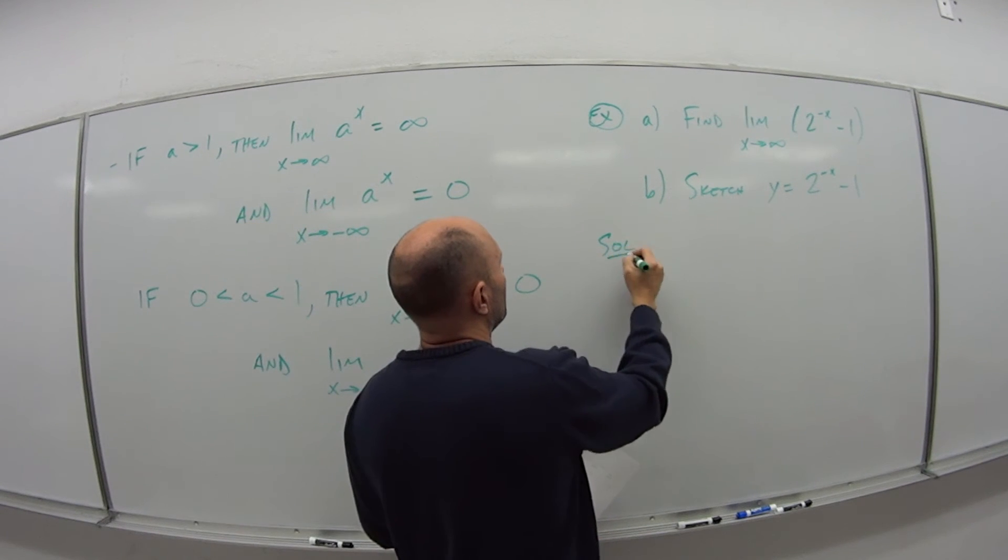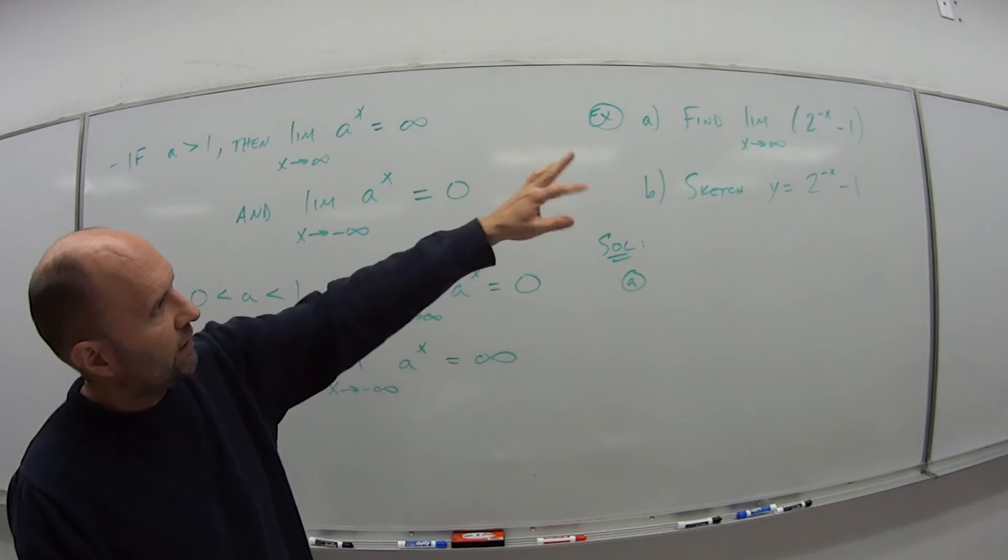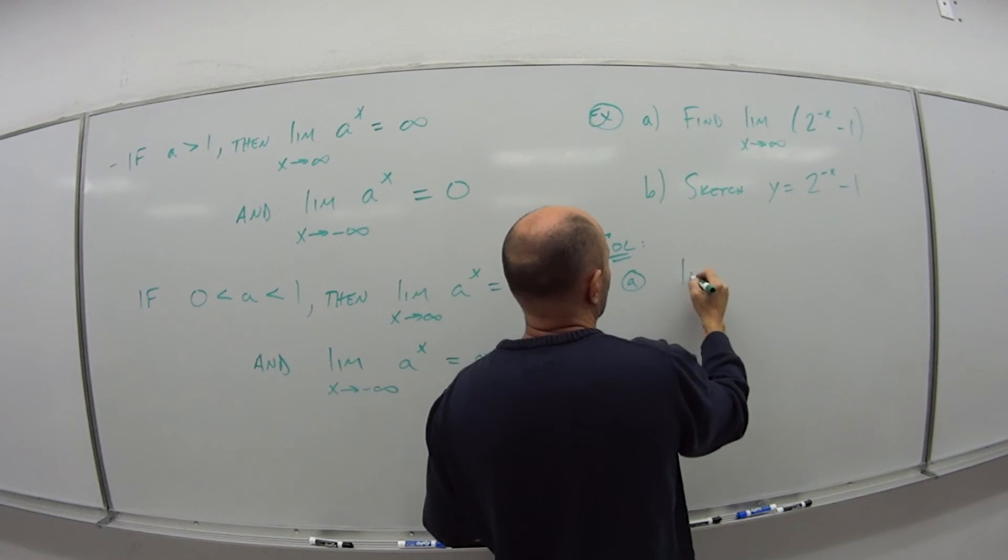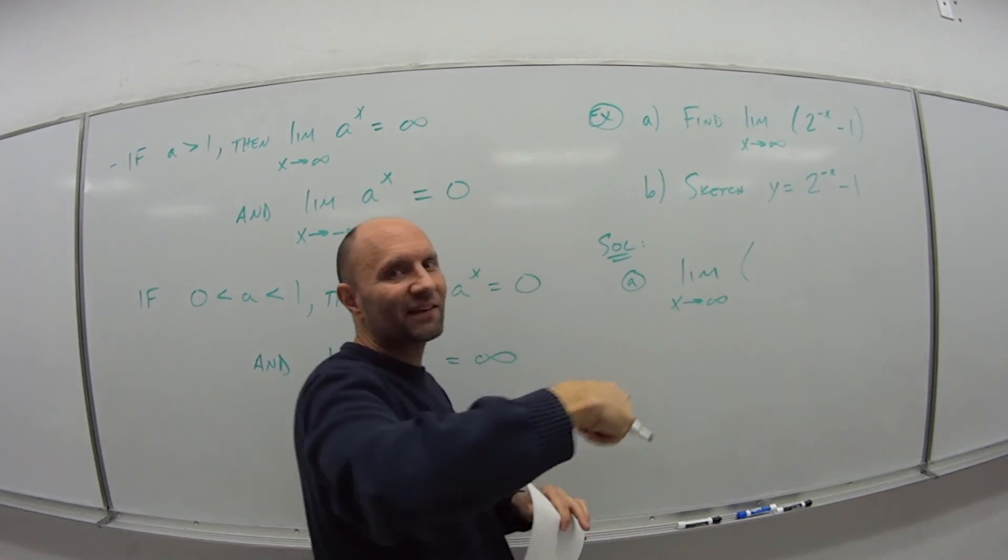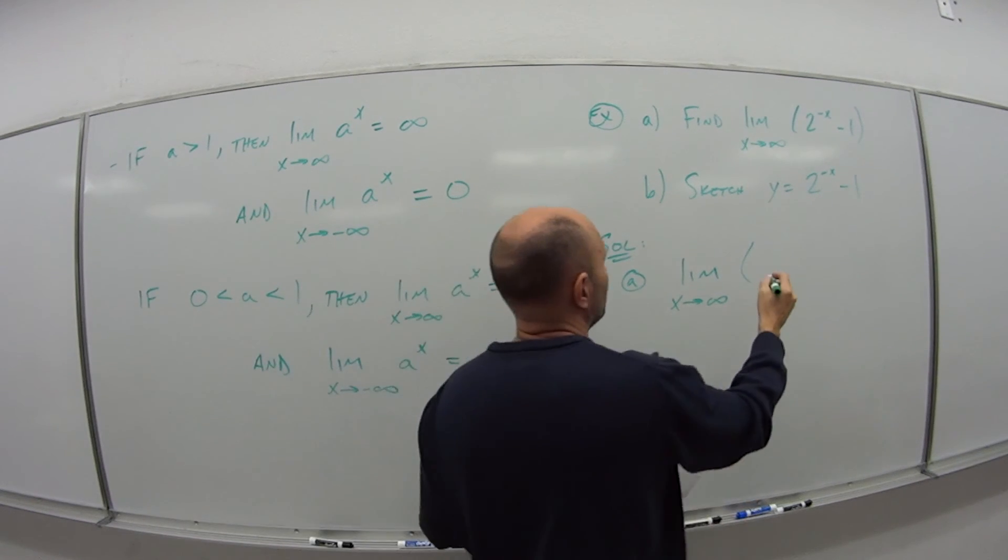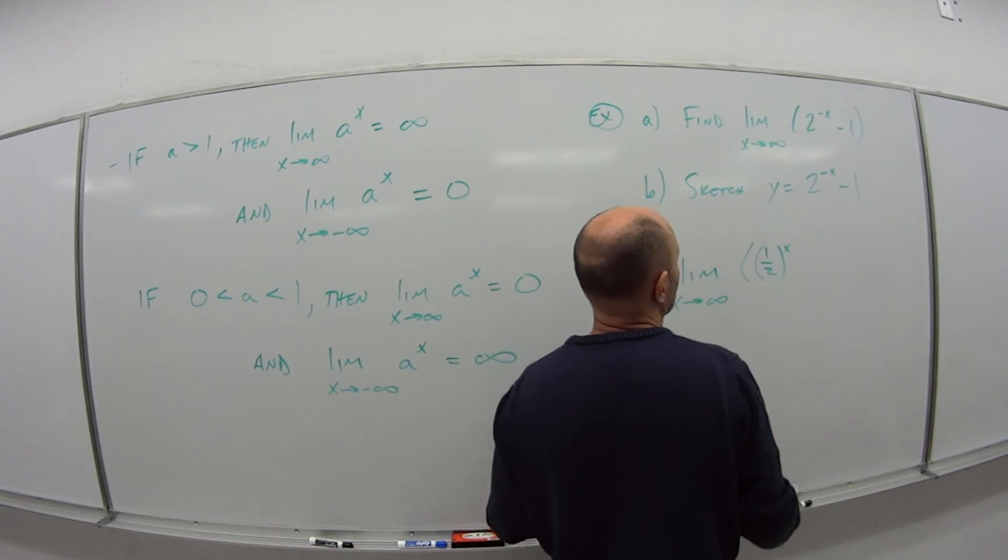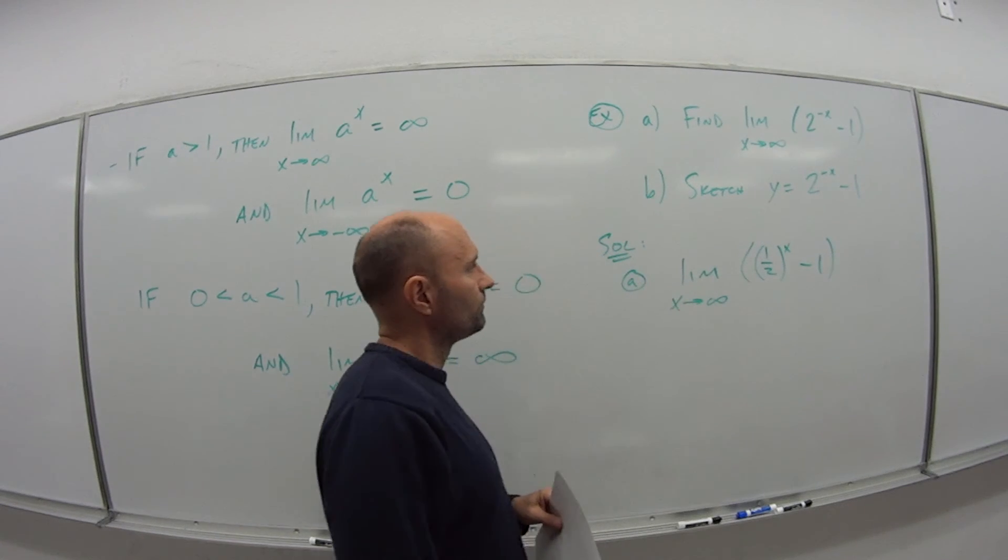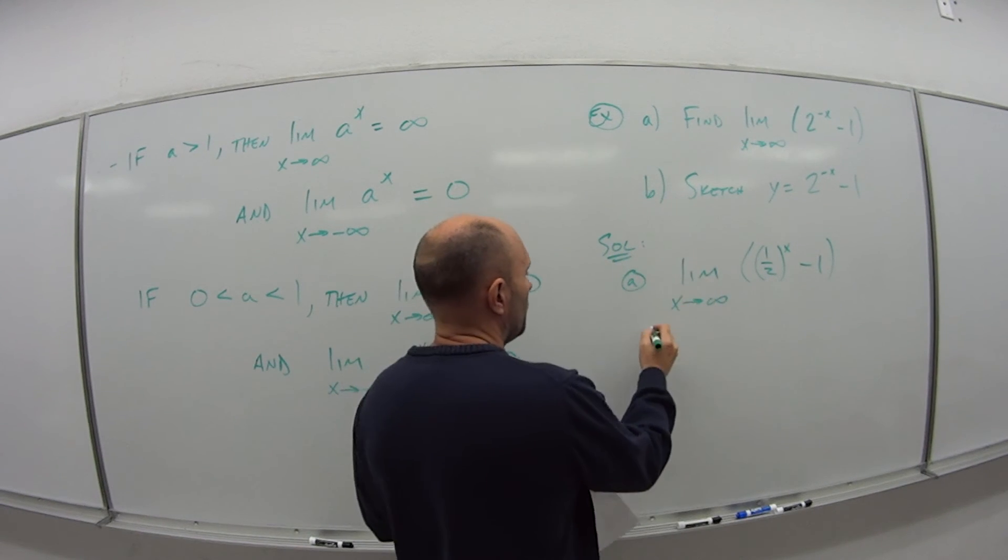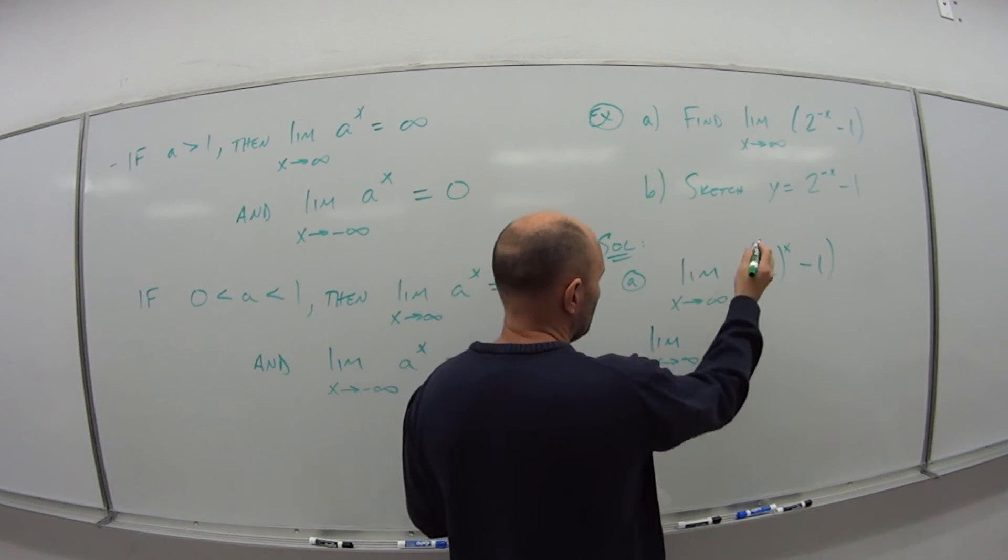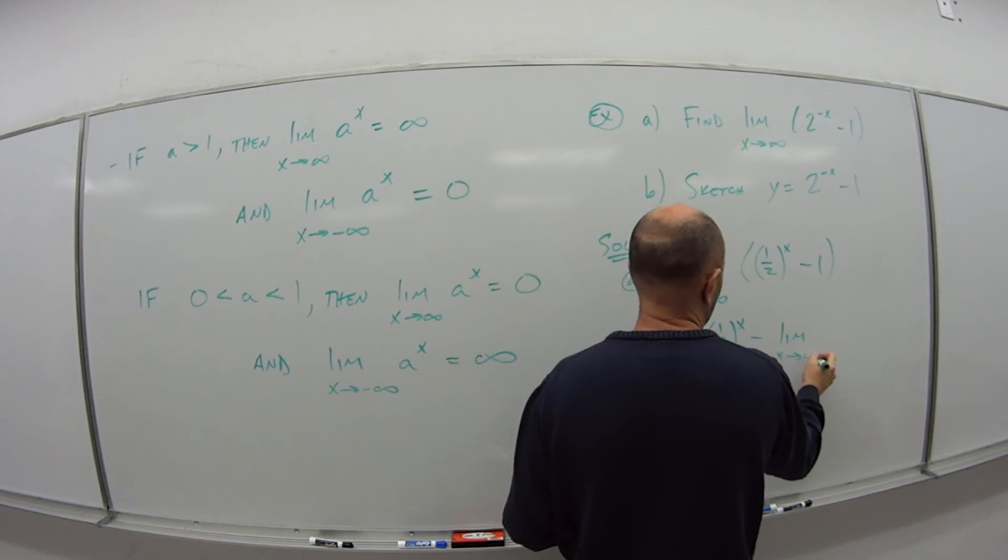So the solution for part a. So the first thing I'm going to do is rewrite that 2 to the minus x. So this is really what? It's the limit as x goes to infinity of 2 to the minus x, if I want that exponent to be positive, I have to take the reciprocal. So 2 over 1 becomes 1 over 2, all to the positive exponent x minus 1. And now if I take the limits, I apply the limits separately to each one. So this is the limit as x goes to infinity of 1 half to the x minus the limit as x goes to infinity of 1.